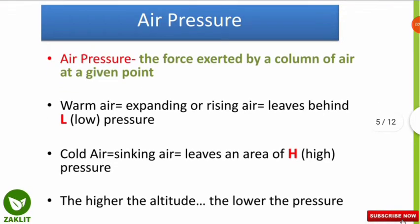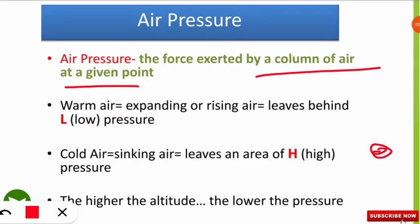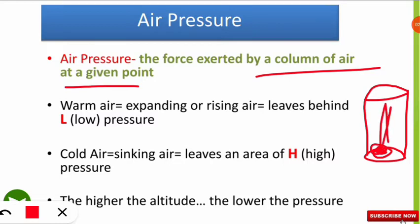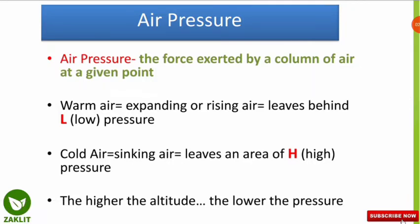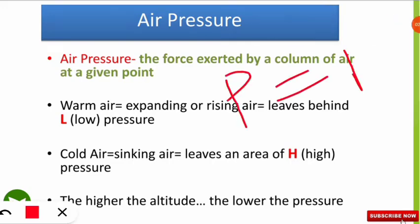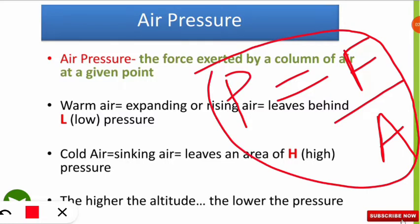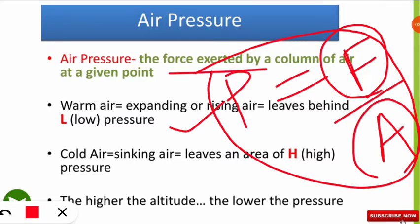Air pressure is the force exerted by a column of air at a given point. Imagine an imaginary column of air at a point on the earth — the force exerted by that column of air at that point is called air pressure. The formula is: pressure equals force divided by area, which we have learned since school. Many numericals come from this simple formula.